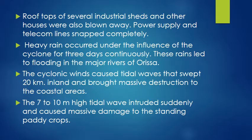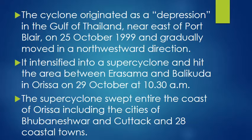The cyclonic winds caused tidal waves that swept 20 km inland and brought massive destruction to the coastal areas. The 7 to 10 meter high tidal waves inundated suddenly and caused massive damage to the standing paddy crops. The cyclone originated as a depression in the Gulf of Thailand, near east of Port Blair, on 25 October 1999, and gradually moved in a north-westward direction, intensifying into a super cyclone.